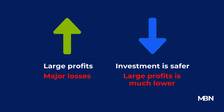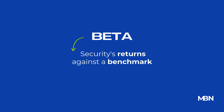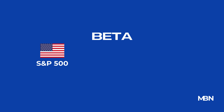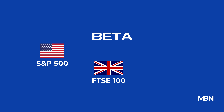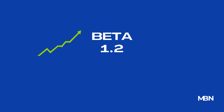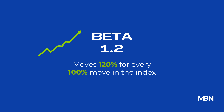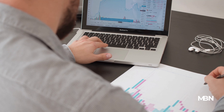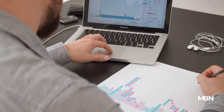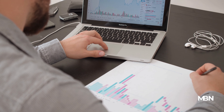One common method to measure a security's volatility is using beta. This compares the security's returns against a benchmark, like the S&P 500 in the US, the FTSE 100 in the UK, or the Nikkei in Japan. If a stock has a beta of 1.2, it historically moves 120% for every 100% move in the index. Understanding beta helps investors figure out how much risk they're taking compared to the overall market.